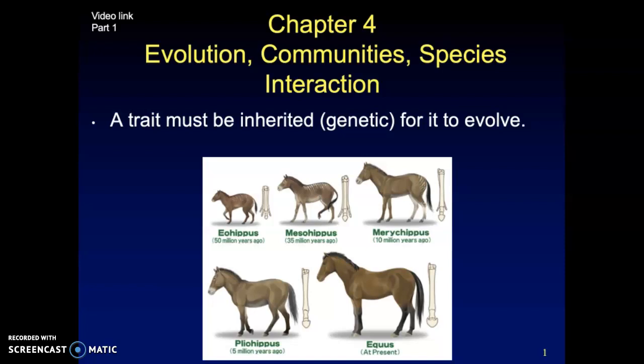Welcome. Let's take a look at evolution, communities, and species interactions. As we go through this chapter, we want to think about how all these things connect. How two species interact with each other influences community dynamics — whether you're a predator, prey, or working symbiotically together. As species do this over time, they're evolving. All of these concepts are intertwined. That's why we're looking at them as a cluster of ideas.